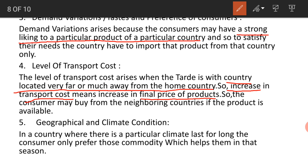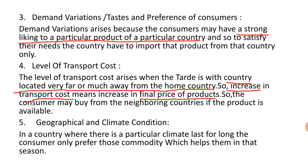The fifth factor is geographical and climate conditions. In a country where a particular climate lasts for a long time, the consumer will only prefer those commodities which help them in that season. For example, if India is trading with South Africa, Cambodia, or Gulf countries, exporting sweaters there would not work because those countries don't have winters. People in Jammu & Kashmir and Himachal Pradesh have heavy winters and snowfall, so they will not buy summer clothes. People prefer commodities suited to their particular climate.